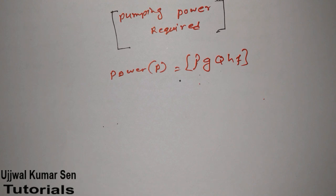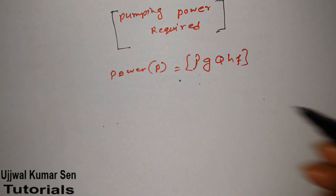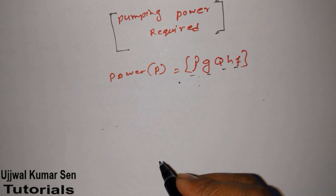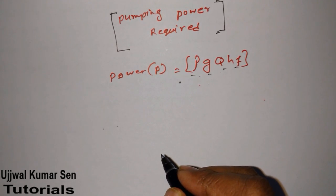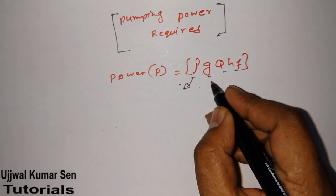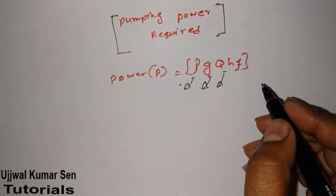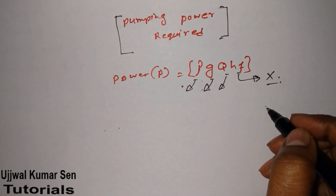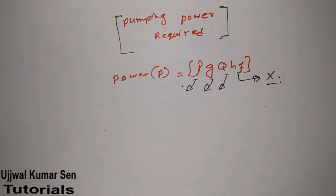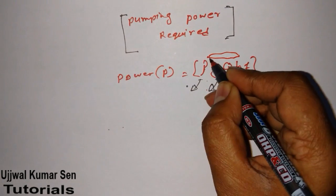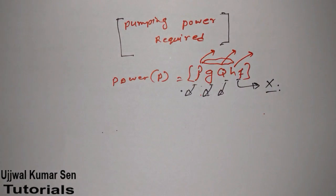To find pumping power, you need to know all these terms. In examination questions, density and Q are usually given directly. However, in most questions, H_F — the head loss — is not given directly. So you need to know how to find out H_F. That's the part that makes questions a little tough.